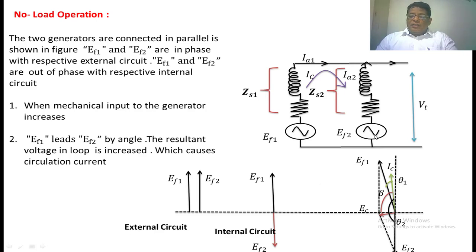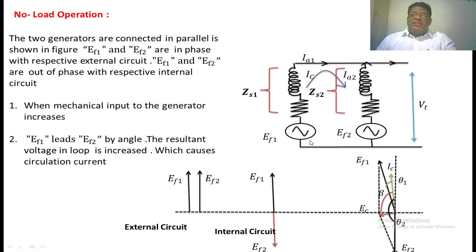For the second machine, the synchronizing power equals EF2 into Ic into the cosine of the angle between Ic and EF2, which is more than 90 degrees. So the power becomes negative, meaning this machine will be operating as a motor — its speed will be increasing, whereas the speed of the first machine will be decreased when we increase the mechanical input of one generator. In this manner, autosynchronization will occur in a parallel operated installation.